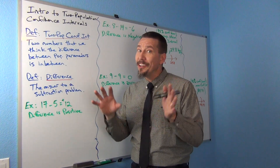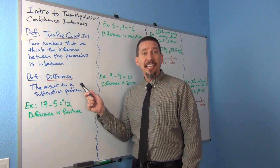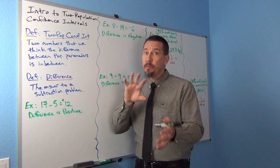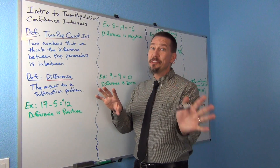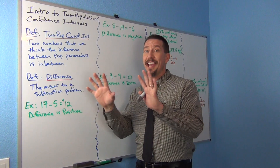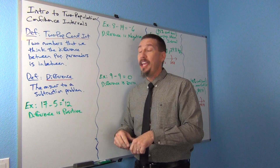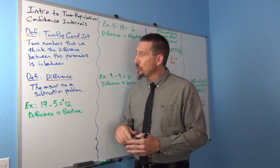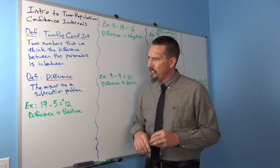The key word here is difference — think of it as the answer to a subtraction problem. So in two population confidence intervals, it's not really measuring population one or population two. It's trying to see how different they are: which group is higher and how much higher. So we need to explore differences a little bit just so you understand.